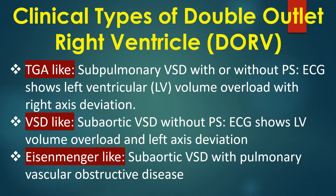The TGA-like type has a sub-pulmonary VSD with or without pulmonary stenosis. ECG shows left ventricular volume overload with right axis deviation.